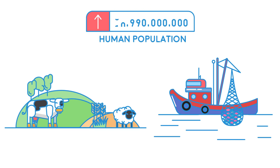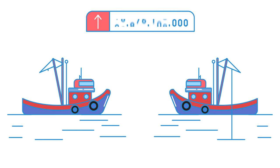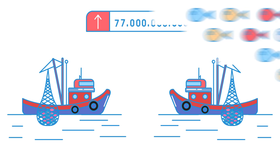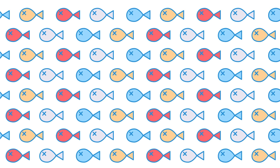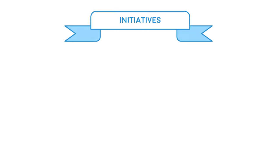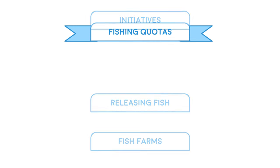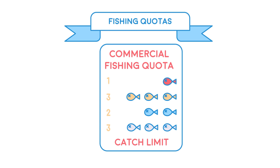We remove more than 77 billion kilograms of fish from the ocean each year. Unsurprisingly, the numbers of some species of fish in the wild are declining because of overfishing — we are taking fish from the sea faster than populations can reproduce, and they might go extinct if their populations continue to fall. There are several initiatives introduced to help conserve fish populations. Fishing quotas are strict limits on the amount of fish people can catch, which reduces the amount being taken from the sea.